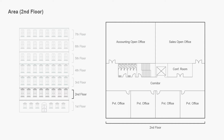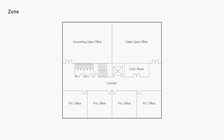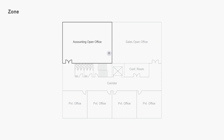That brings us to our next term, which is zone. Zone is a division of an area, and it is driven by occupant requirements such as scheduling needs or control strategy needs. It can also be driven by hardware limitations. For example, the accounting team is a 9 to 5 operation, but the sales team gets in at 9 and leaves at noon. Because of these unique scheduling requirements, we would create a zone for the accounting office and a separate zone for the sales office.